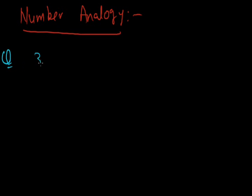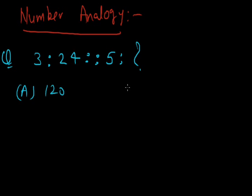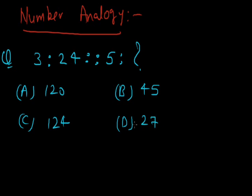Question first: 3:24::5:? Here option A, 120. Option B, 45. Option C, 124. Option D, 27. Here for solution, the relation between 3 and 24: here 3 cube minus 3, that is 24. Then 5 cube minus 5 is 120. So answer is 120.